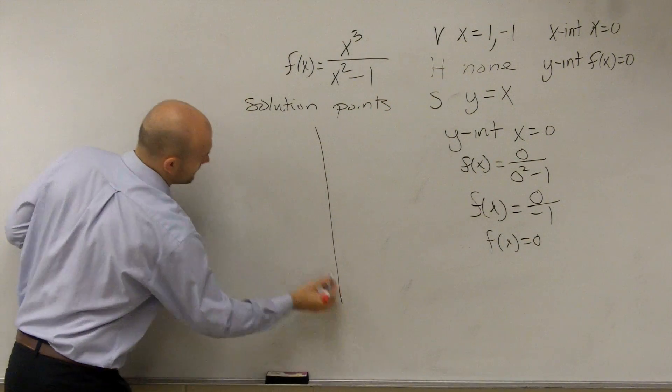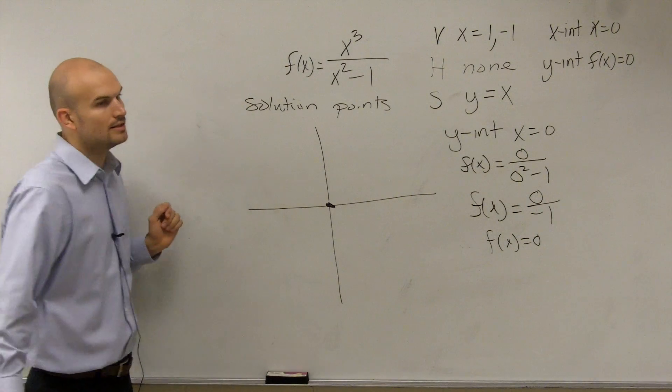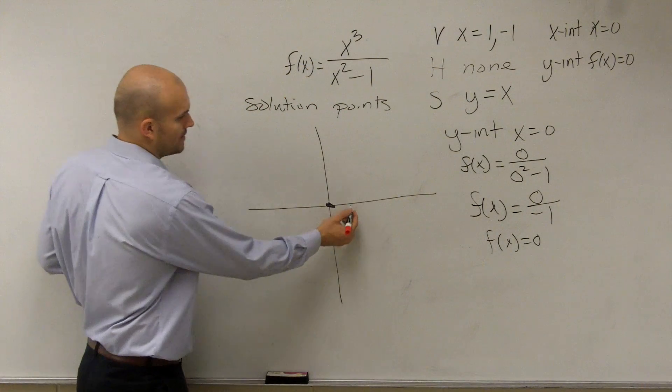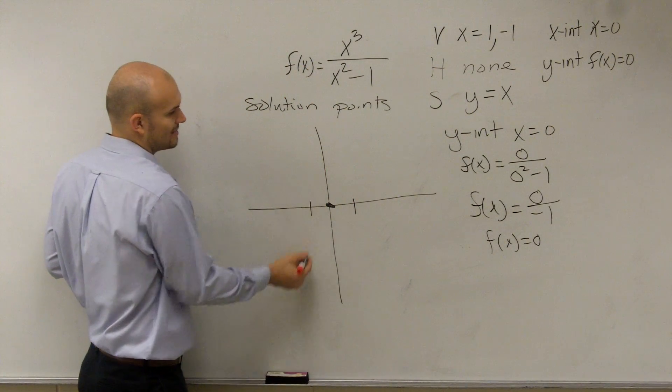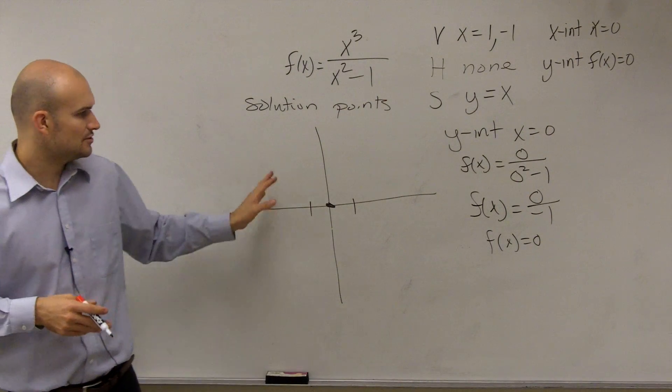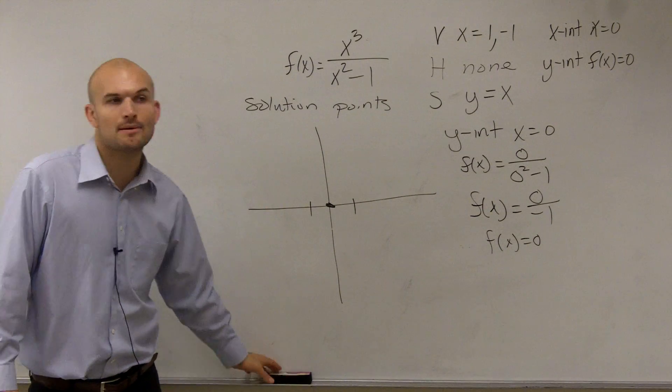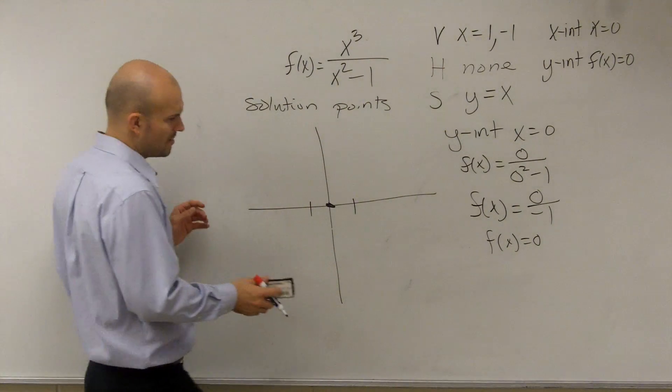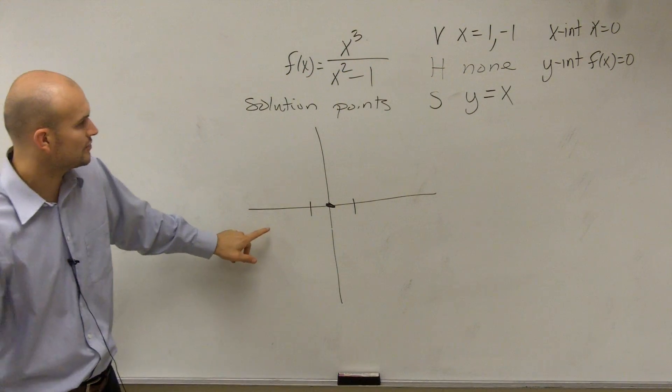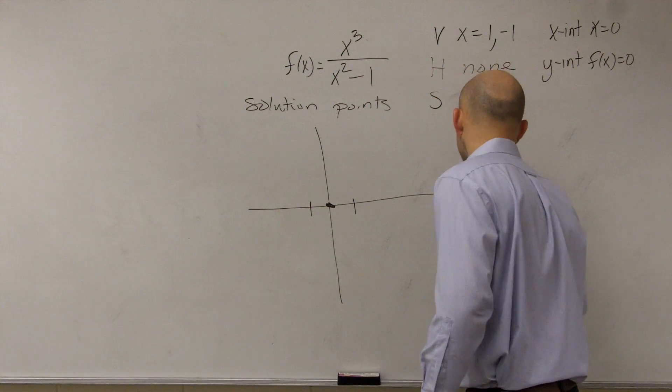You need to write in your solution points. So if you guys look at it, we know we have a vertical asymptote at 1 and a vertical asymptote at negative 1. So what I'd like you to do is preferably choose two points to the left and to the right of each asymptote. For this problem, I'm only going to choose one just so we can see where we're at, just to kind of get through this problem.